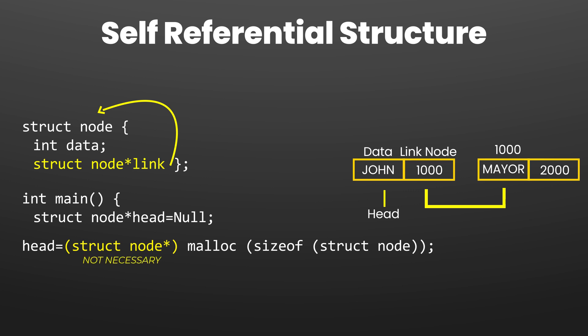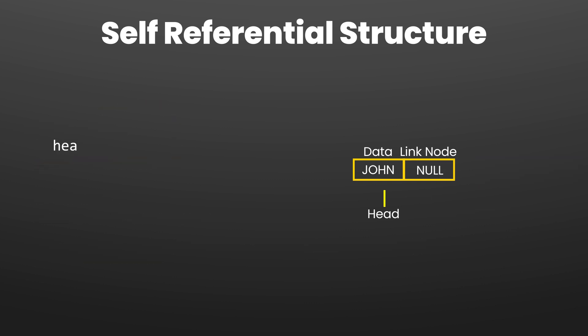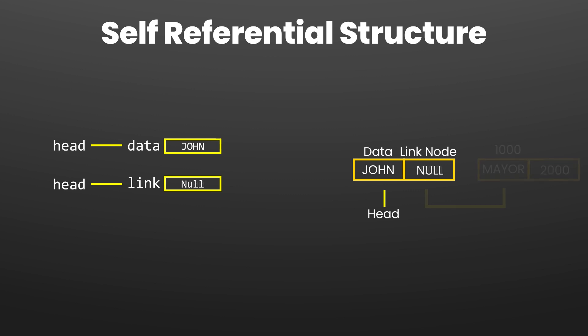Using the head pointer followed by the data field gives us the value placed inside the first node in the linked list. Similarly, using head followed by link gives us access to the link part of that node. In this case, since we have only a single node, we get null — but with multiple nodes we would get a pointer to the next node.